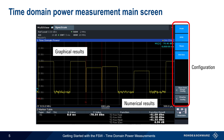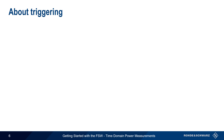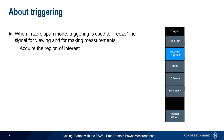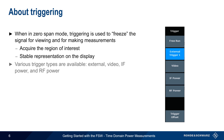In the remainder of this presentation, we will explain how to configure the measurement parameters and interpret the result displays. But first, we need to discuss triggering, which is used in zero span to freeze the signal on the display for viewing and for making measurements. In other words, triggering is used to acquire the region of interest and/or to provide a stable representation of a repetitive signal. The FSW supports a variety of different trigger types, including external triggers, video triggers, and IF or RF power triggers.